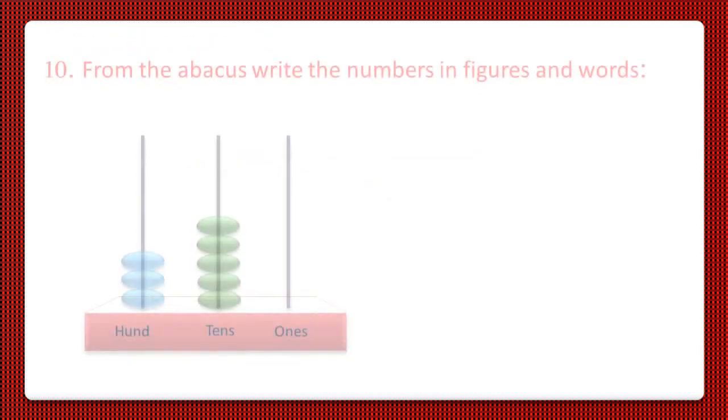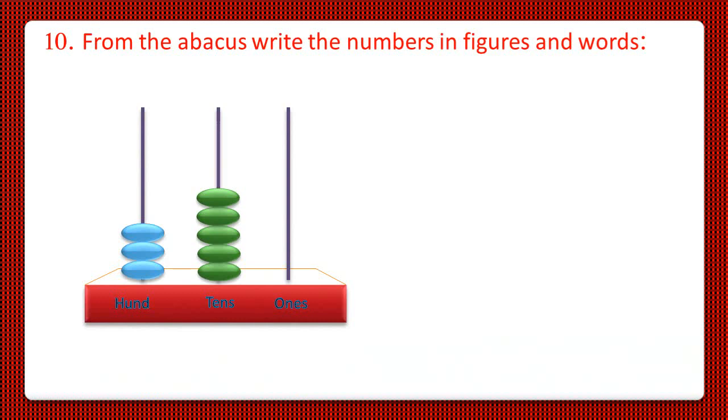Now let us move to question number 10. From the abacus, write the numbers in figures and words. The 1 stick is empty and in the 10 stick, let us count the beads. It is 1, 2, 3, 4, 5. So 5 beads in the 10 stick, that is 5 tens. And in the 100 stick, it is 1, 2 and 3. So 3 hundreds.